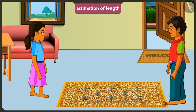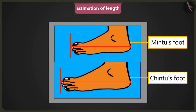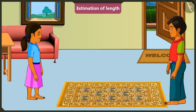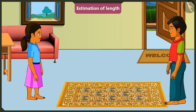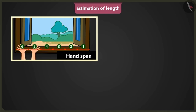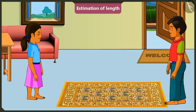Mintu, the carpet did not shrink. Look carefully. My feet are longer than yours, and your feet are shorter than mine. That's how the measurement of the same carpet came out differently. Yes, Mintu, because everyone's body parts vary in size, so everybody gets different measurements. Now I understand that handspan, cubit, and foot span — these units are not always the same. Yes, and always keep in mind that these units are not correct because everyone's measurements are different.